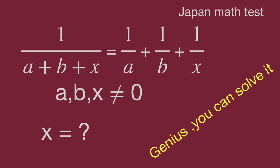Hello, you are watching Balahibo Math Genius videos. The questions come from a Japan math test. The equation is: 1 over (a plus b plus x) equals 1 over a plus 1 over b plus 1 over x, where a and b are not equal to zero. Find the value of x.